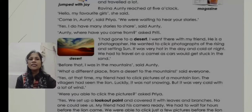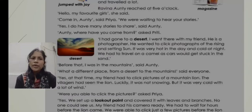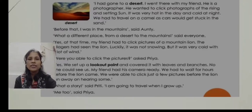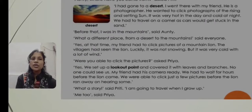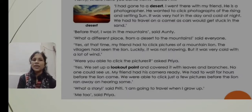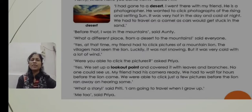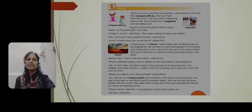'Before that, I was in the mountains,' said Auntie. 'What a different place — from a desert to the mountains!' said everyone. 'Yes, my friend had to click pictures of a mountain lion. The villagers had seen the lion. Luckily it was not snowing, but it was very cold with a lot of rain.' 'Were you able to click the pictures?' asked Priya. 'Yes, we set up a lookout point and covered it with leaves and branches. No one could see us. My friend had his camera ready. We had to wait for hours before the lion came. We were able to click just a few pictures before the lion ran away on hearing a sound.' 'What a story!' said Preeti. 'I am going to travel when I grow up!' 'Me too!' said Priya.